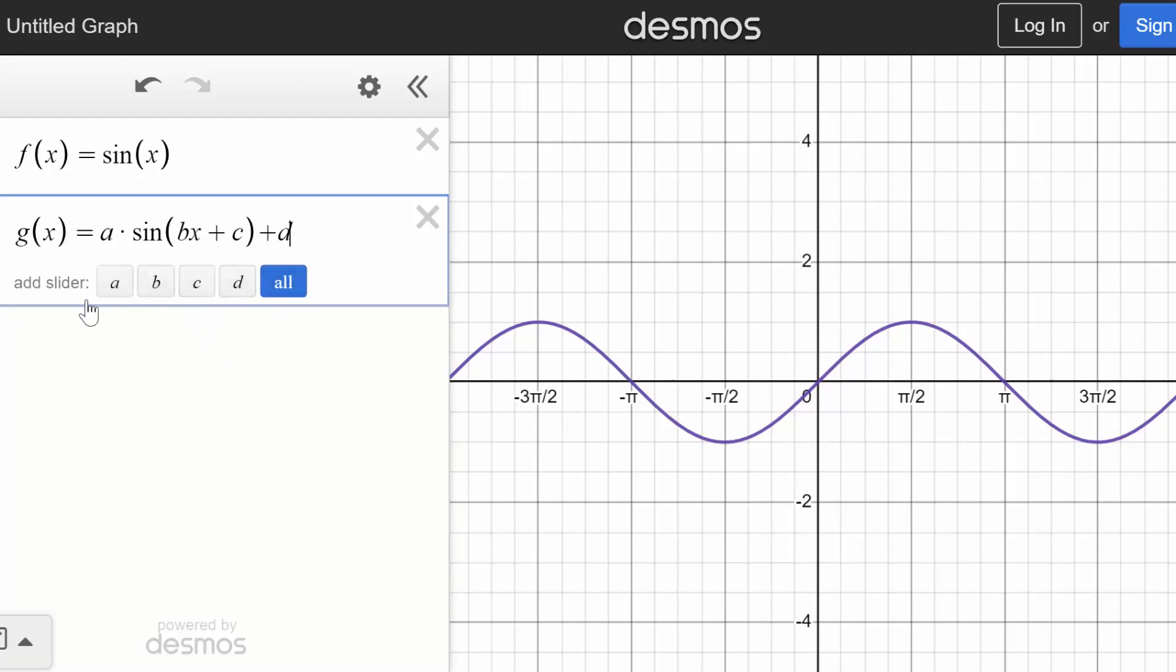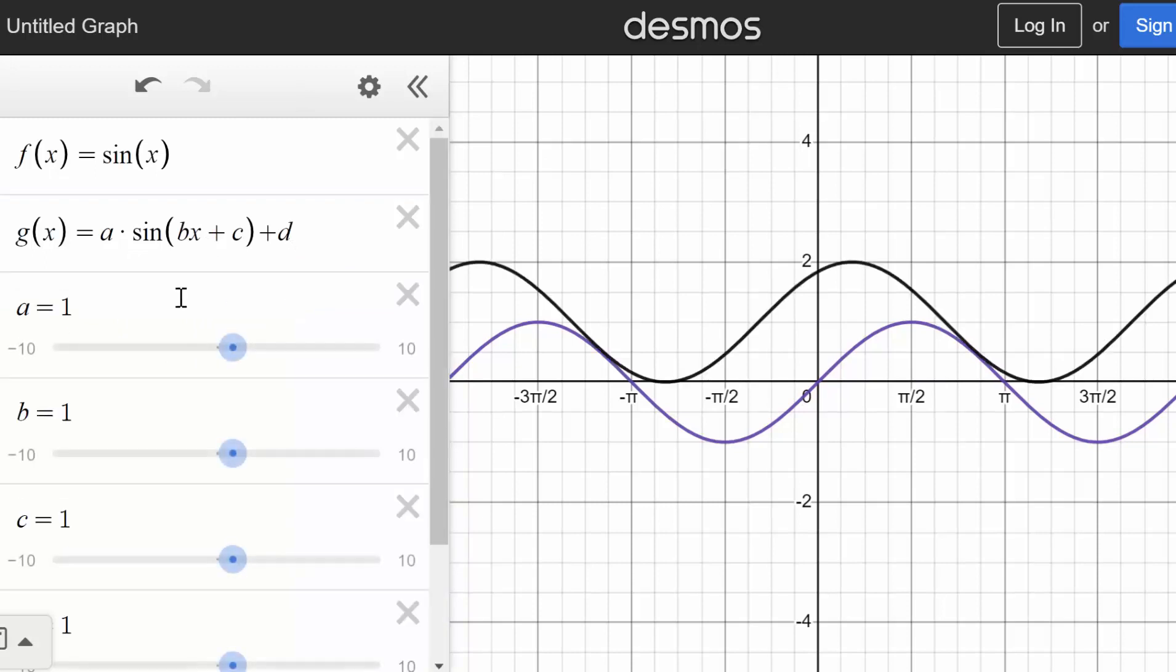And Desmos allows us to use these sliders. So if I add these in, then we can just change the values individually. Now, to get back to our original parent function, we set a to be 1. That's the amplitude.